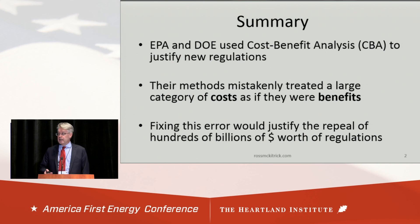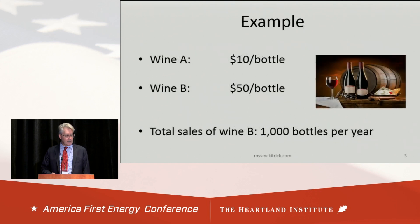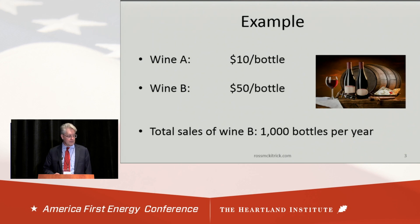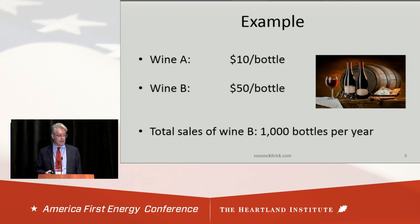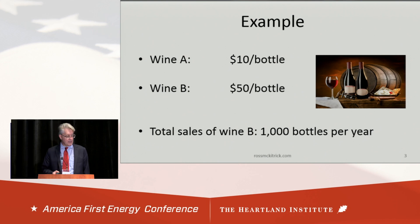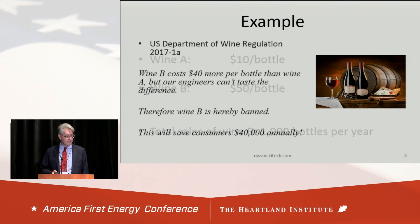To explain it, I need you to understand a simple economic concept, so I'm going to illustrate it with an example. Suppose there are only two types of wine in the world. There's one that costs $10 a bottle, and there's one that costs $50 a bottle. And the second one, because it's more expensive, we only sell 1,000 bottles per year. So there's a $40 price difference between them.